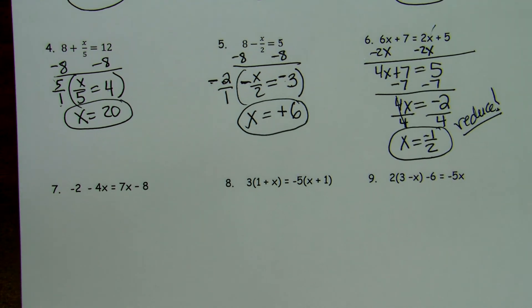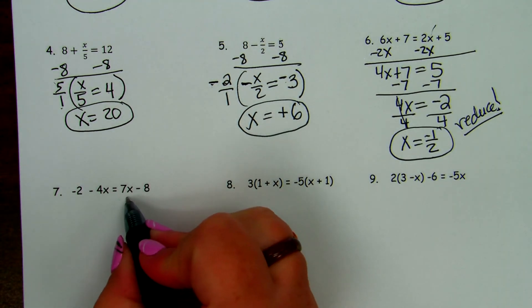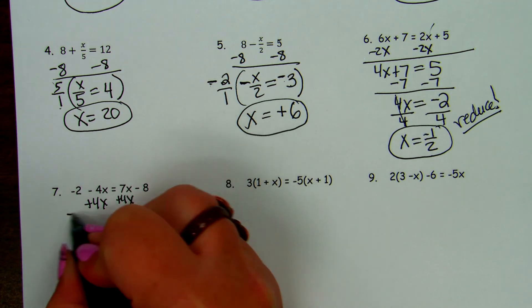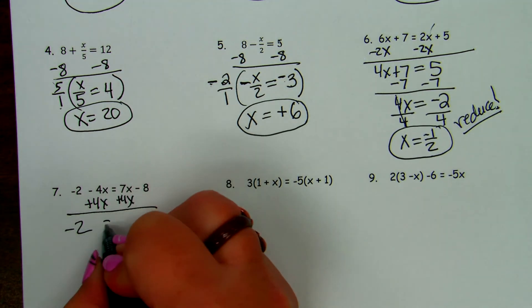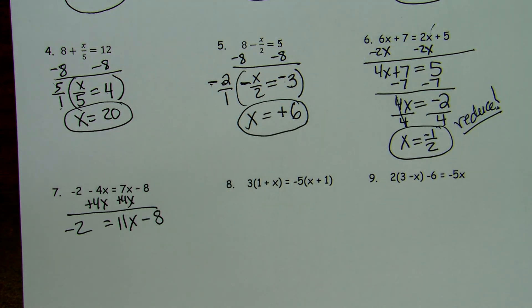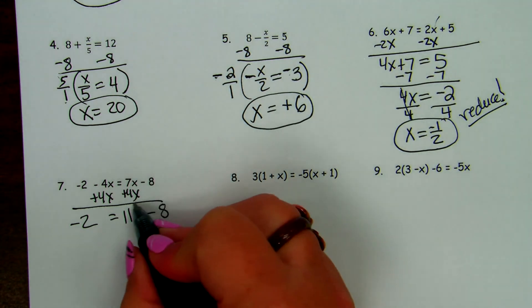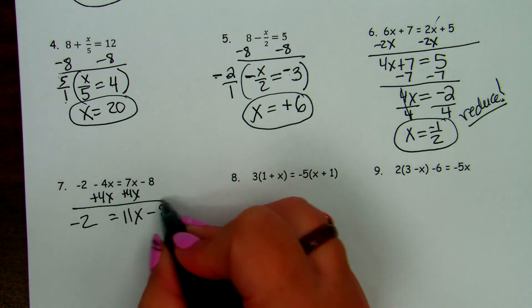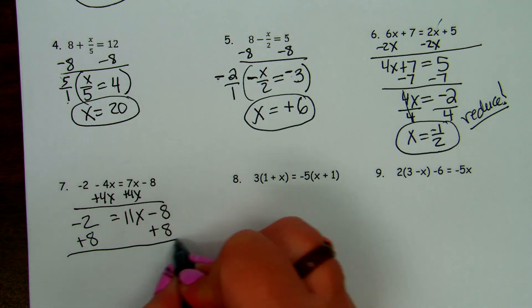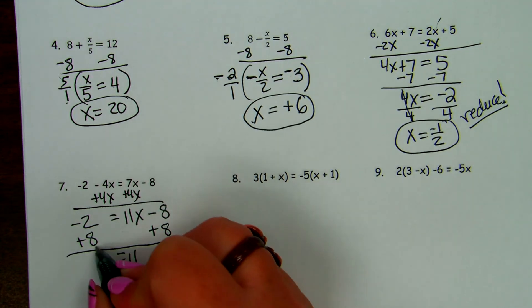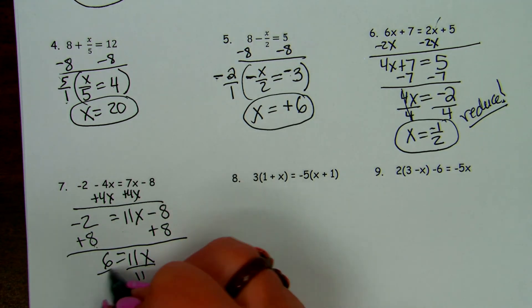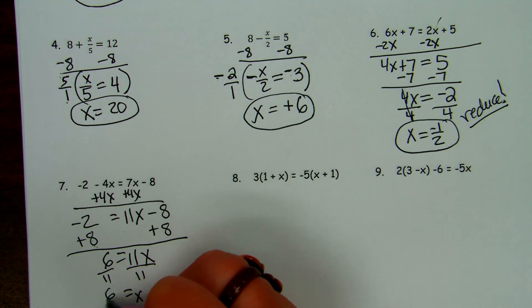So this time, we have a choice. When we're moving the x's, we could subtract 7x and have negative 11x, or we could add 4x. Those cancel. 11x minus 8. I just like to deal with positive as much as possible. How do we get this 11x by itself? What needs to move? The negative 8. So what are we going to do to both sides? Add 8. So those cancel, and negative 2 plus 8 is 6. So we divide by 11, and we get x equals 6 over 11.